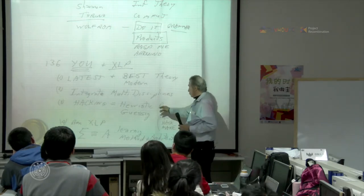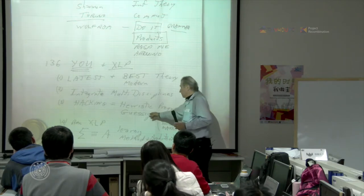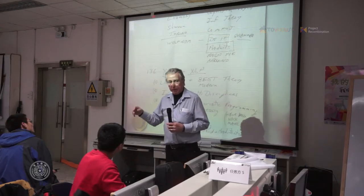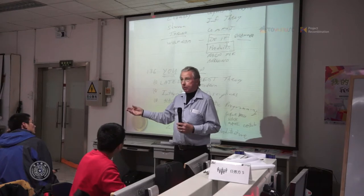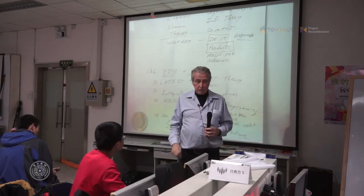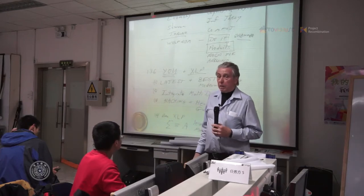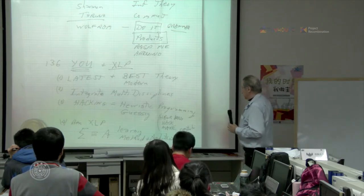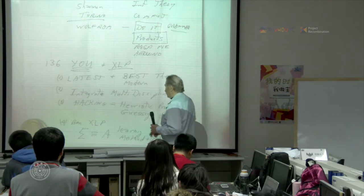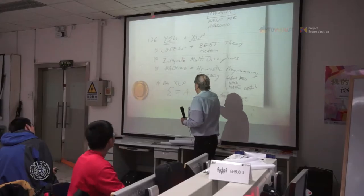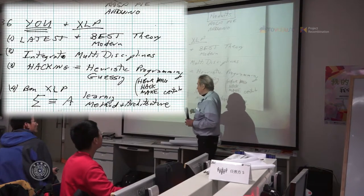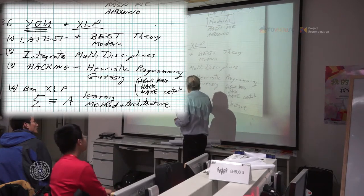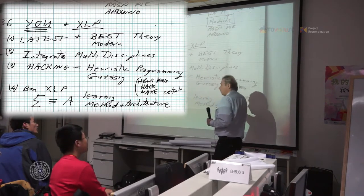So hacking is really heuristic programming and it's a way of guessing. It's not that you go to the answer a little bit at a time and a little bit at a time, it's rather you guess and you've got a good guess as to what the answer is. There's a method in statistics called Monte Carlo method, and the Monte Carlo method is very much like that. You try to guess the solution rather than arrive at it by deduction. So if you think of Ben's XLP, Ben's XLP is really a sum of learning methods and a learning architecture.